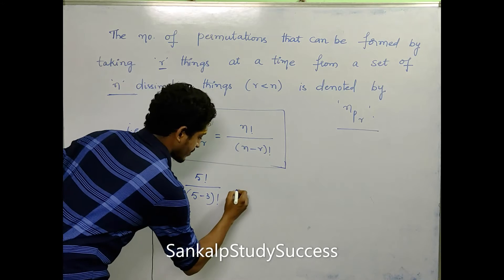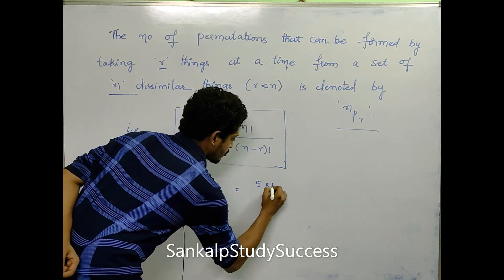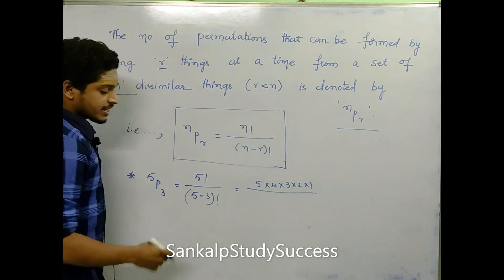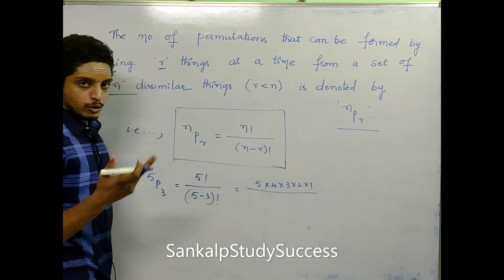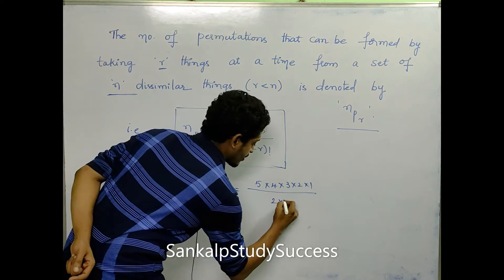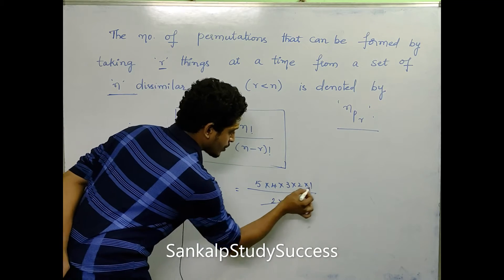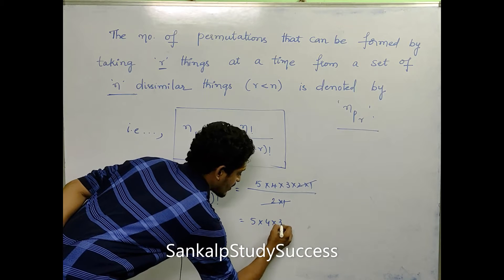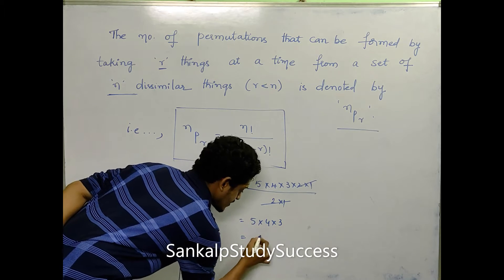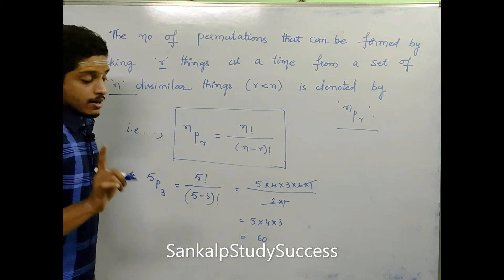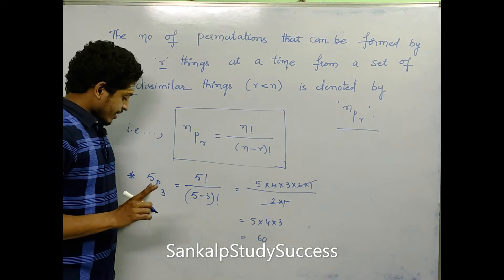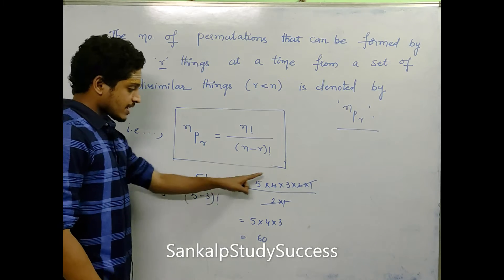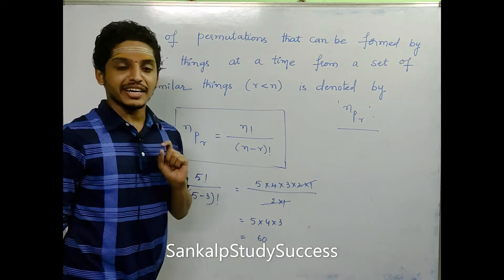What is the value of 5 factorial? 5 into 4 into 3 into 2 into 1. So 5 minus 3 factorial is 2 factorial, which is 2 into 1. The 2 into 1 cancels, leaving 5 into 4 into 3, which is 60. The formula is nPr equals n factorial divided by n minus r factorial.